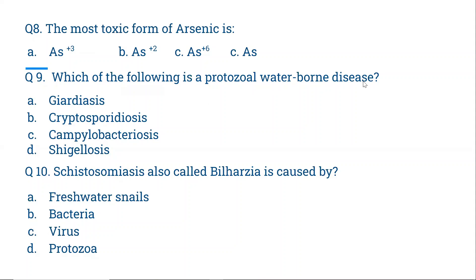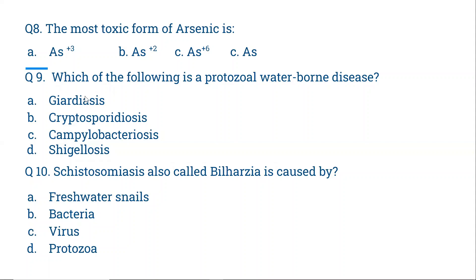Question 9: Which of the following is a protozoal water-borne disease? A. Giardiasis. B. Cryptosporidiasis. C. Campylobacteriosis. D. Shigellosis. Campylobacteriosis and Shigellosis are bacterial diseases. Giardiasis is the only protozoal water-borne disease listed here — caused by a protozoan. So A is the correct option.